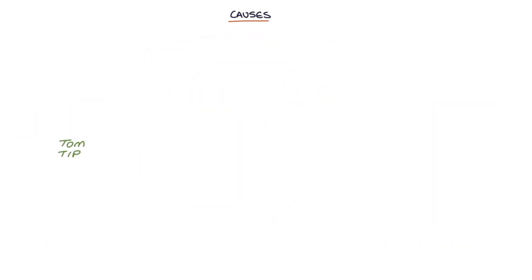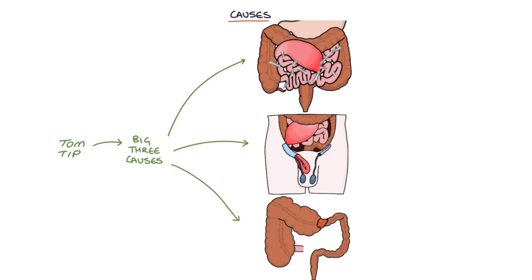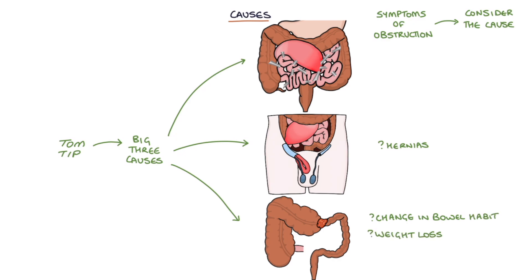A Tom tip for you: learn to recite the big three causes of obstruction without any hesitation. These are the three causes of bowel obstruction you should be able to produce if asked on a ward round or in an OSCE examination. When patients present with symptoms of bowel obstruction, don't just think about obstruction but also consider what the cause could be. Ask about hernias, a change in bowel habit, weight loss and PR bleeding which may indicate bowel cancer, and about previous abdominal surgery that may have resulted in adhesions.